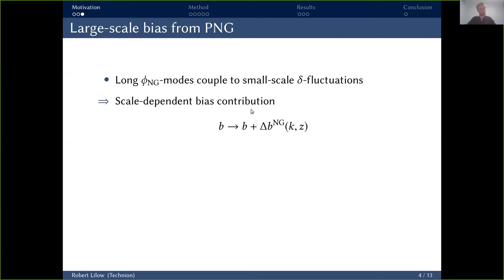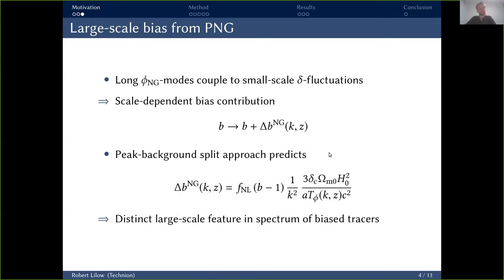So one way to get around this is a certain effect that primordial non-Gaussianities have on bias tracers on large scales. To understand this, consider that if you have non-Gaussian primordial fluctuations, you have mode coupling. That means long modes of this primordial potential will couple to small scale fluctuations in density contrast. And they will modulate the amplitude of these small scale fluctuations, which effectively leads to an extra contribution to the bias of any kind of tracer you use for density contrast. Now this non-Gaussian bias is both redshift and scale dependent, and to estimate and quantify it, you can use the so-called background split method.